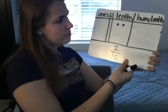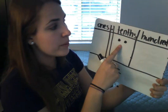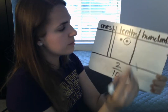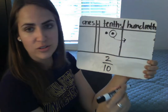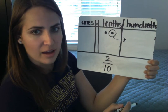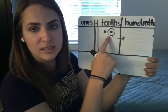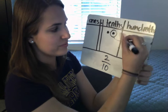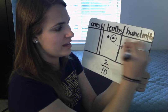So we know in our place value chart that each of these tenths can be decomposed. So I'm going to take my first tenth — if I decompose this into hundredths, how many hundredths will I have? If I decompose this tenth into hundredths, how many hundredths would that give me? You're right, it would give me ten hundredths.